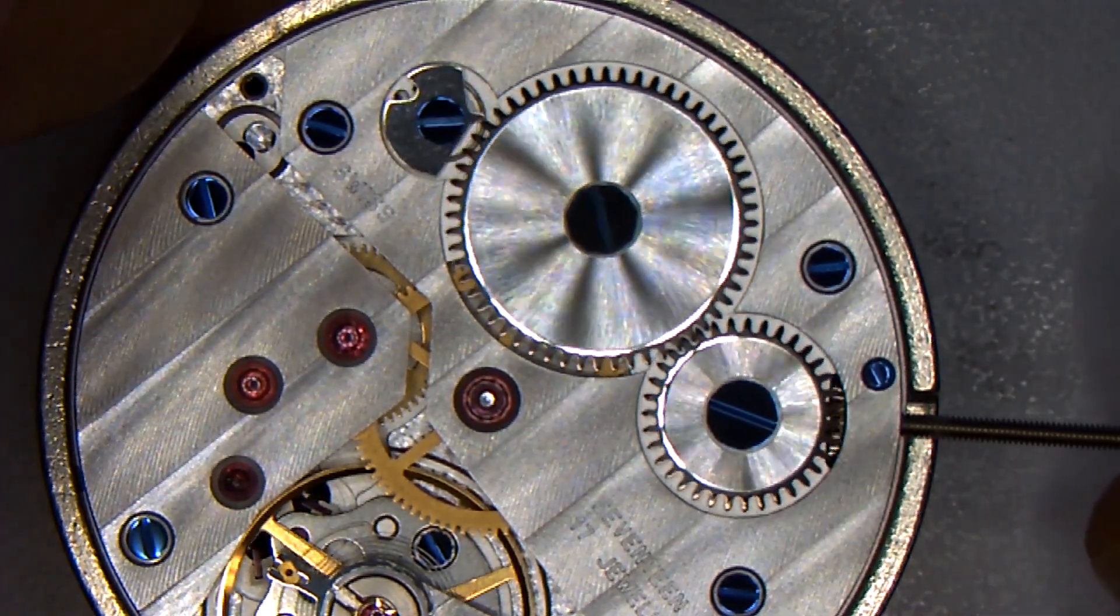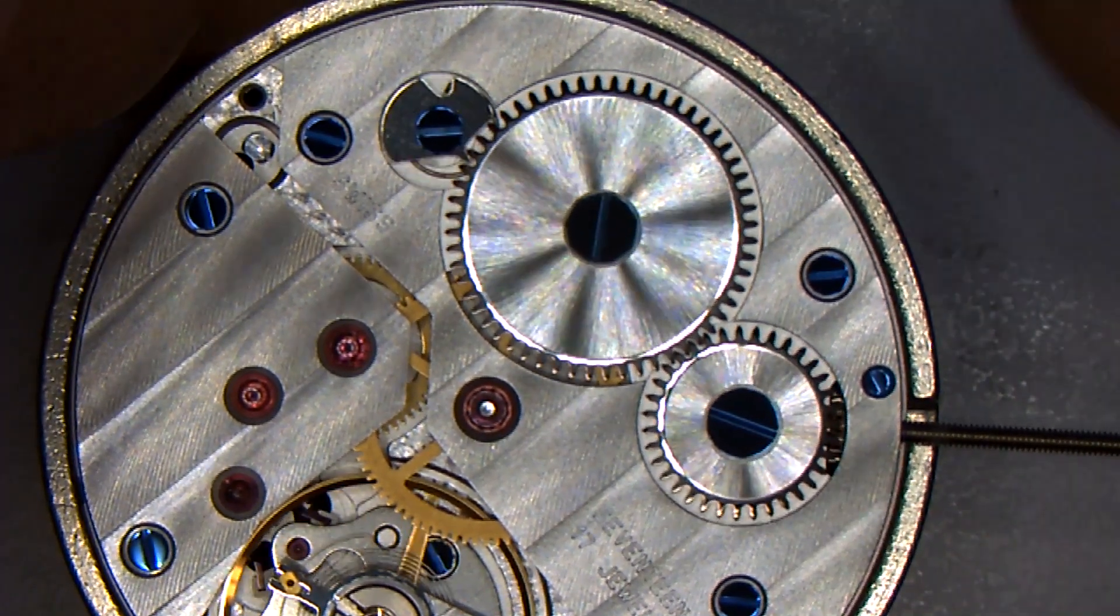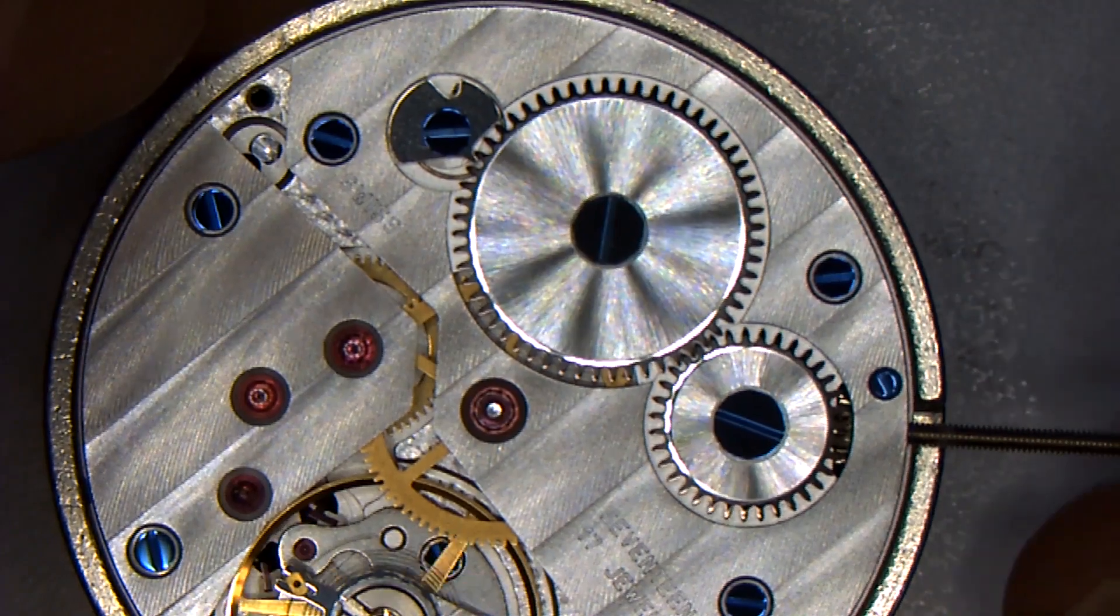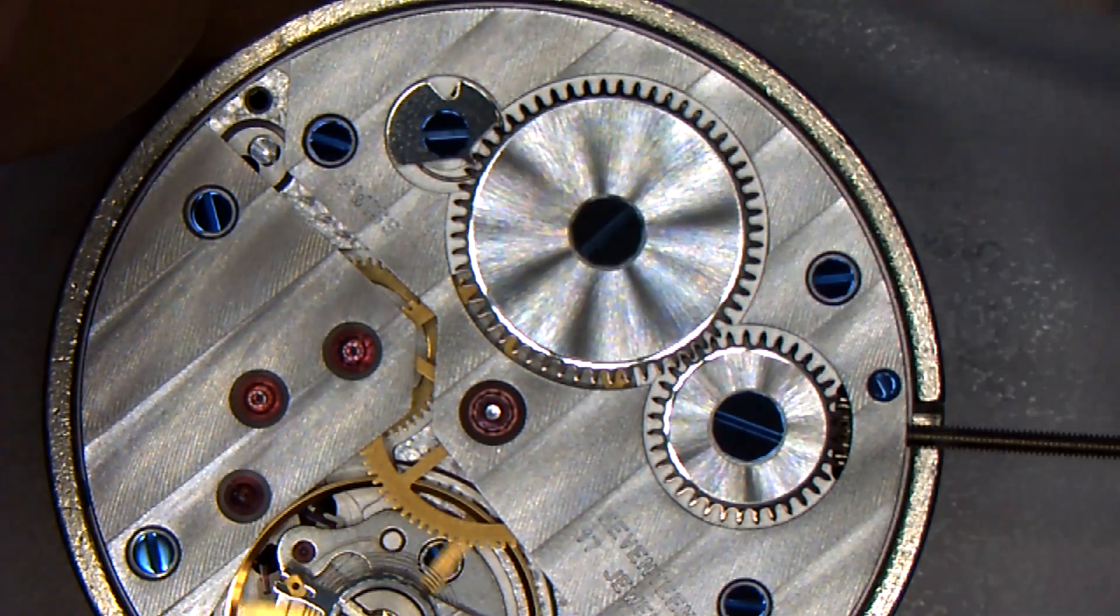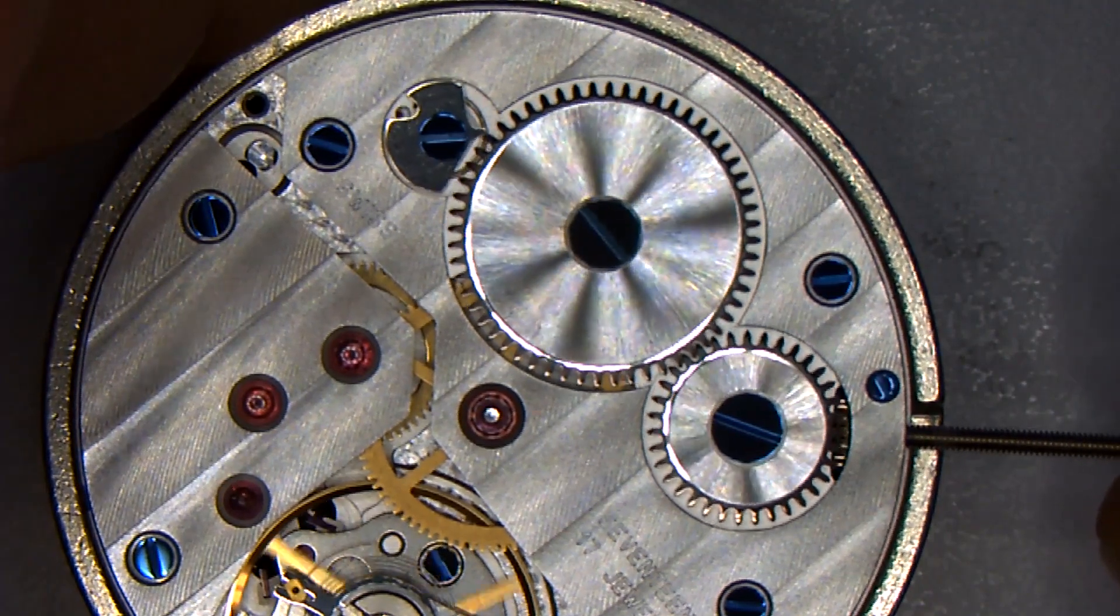So if I notice here, my crown wheel is rotating in a counterclockwise direction. The ratchet wheel, which is here, is rotating in a clockwise direction, and then my click is rotating in between the teeth on that ratchet wheel.